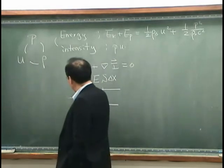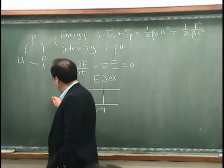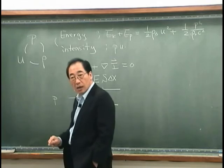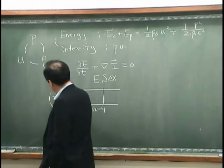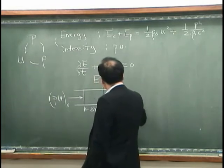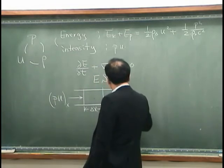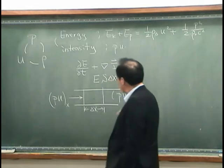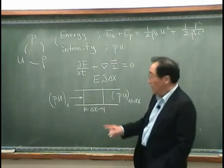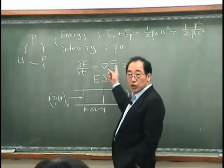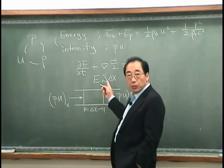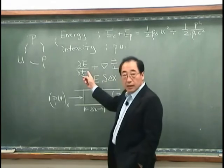Energy coming in would be P. Power coming in would be PU at X. Power coming out would be PU at X plus DX. And the rate of energy increase per unit time is this, has to be balanced.